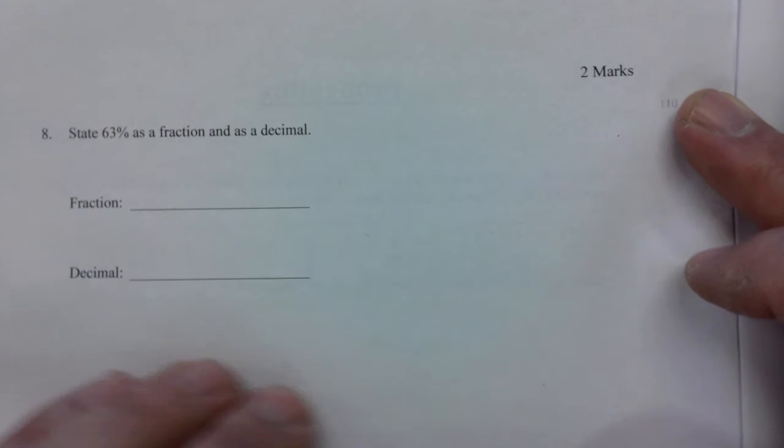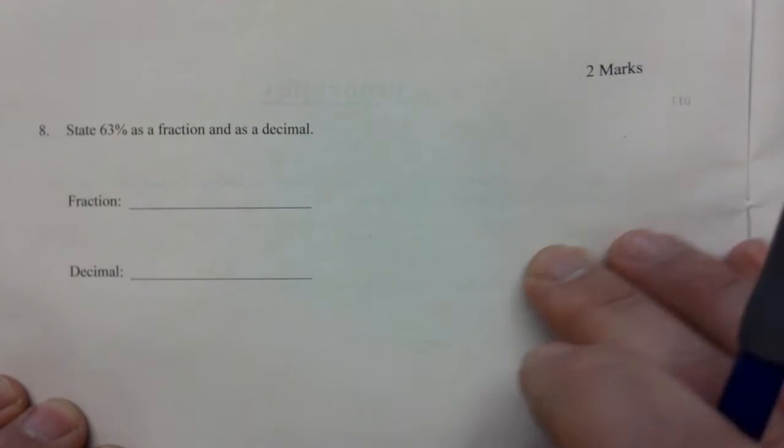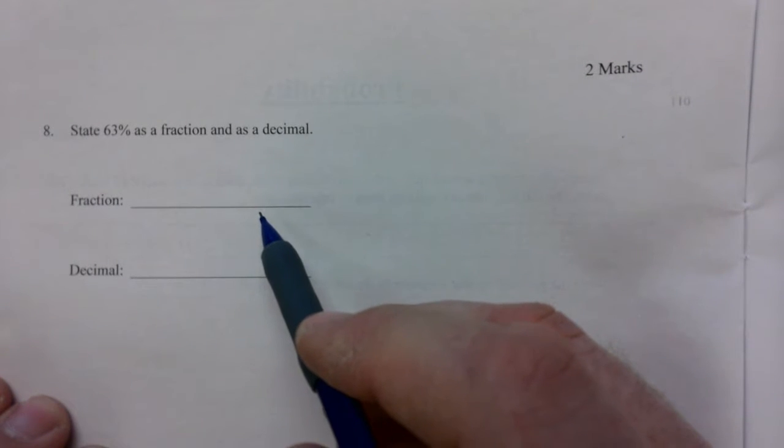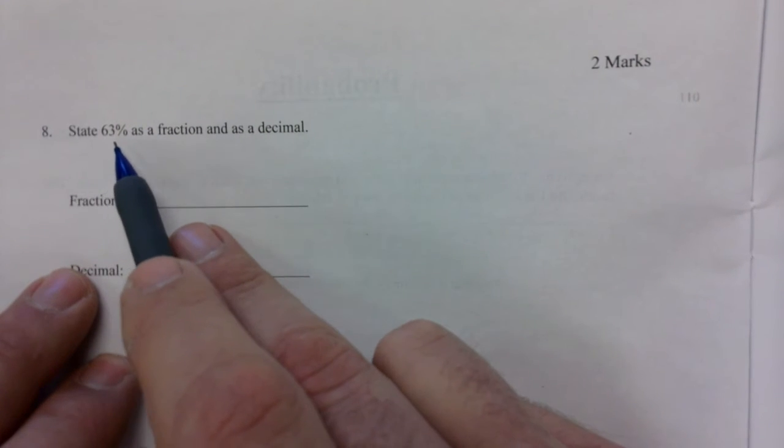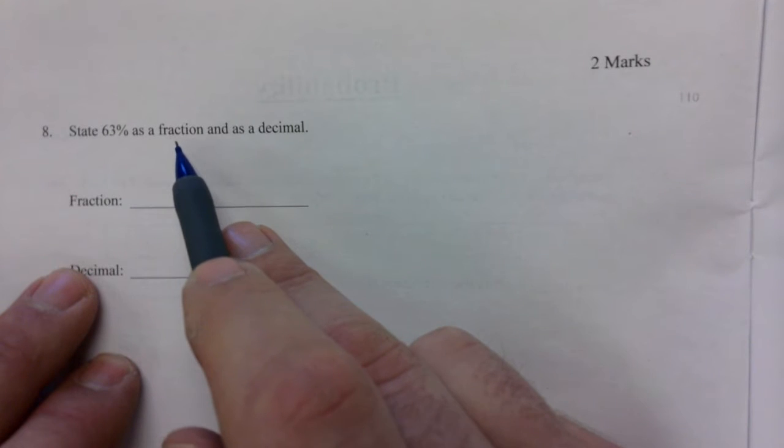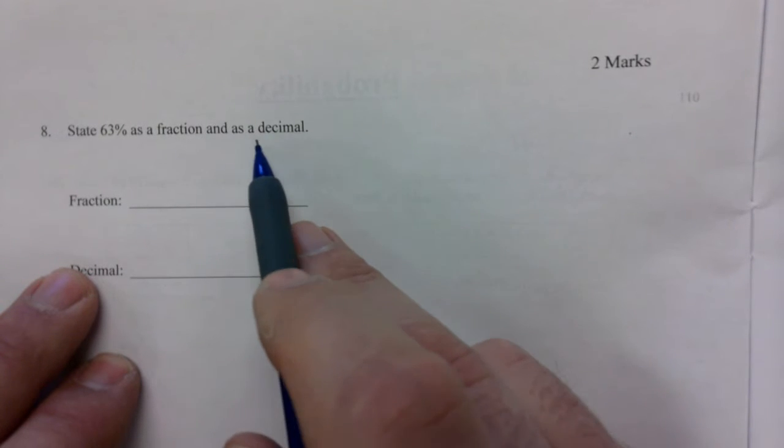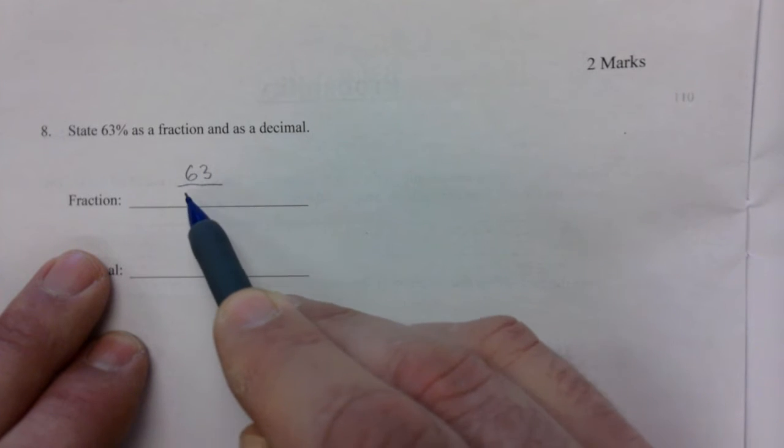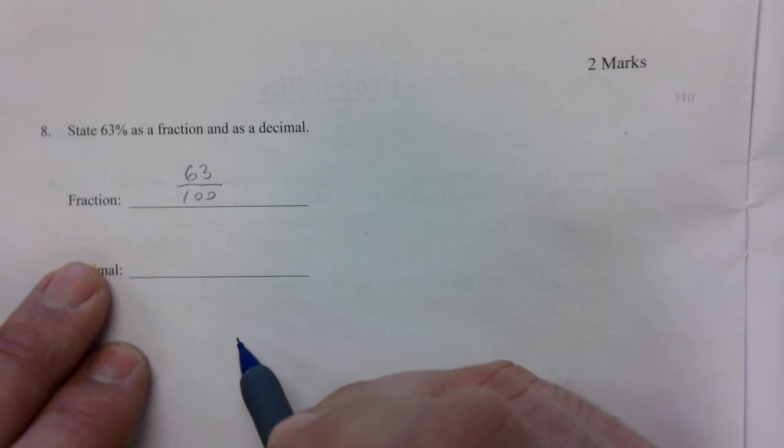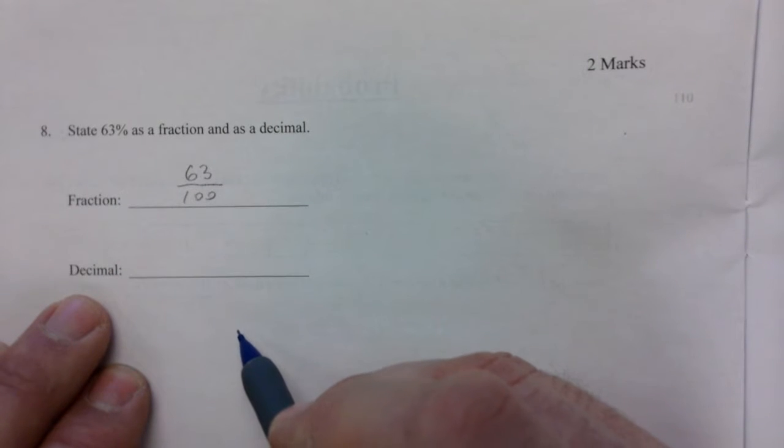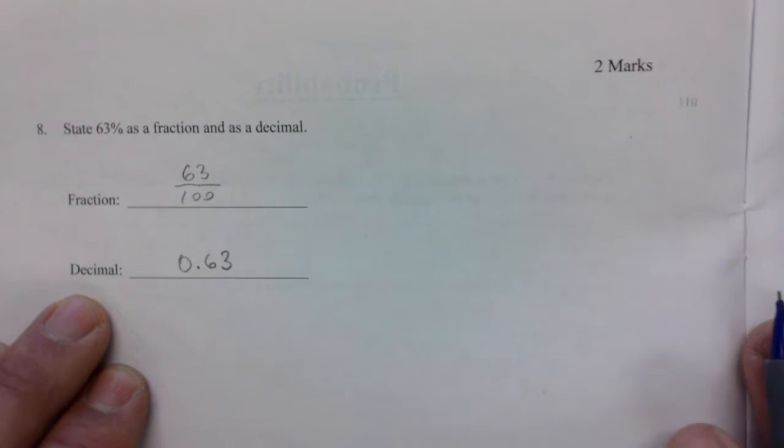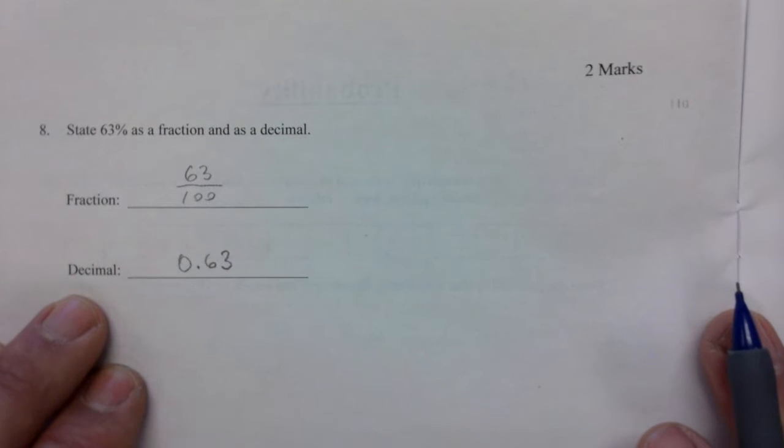Next page, easy one again. On an exam, you are almost guaranteed to have a few easier questions. So this is page nine. State 63% as a fraction and as a decimal. Any percentage is out of 100, so 63 out of 100. Decimal, 0.63. No rounding, nothing to worry about there.